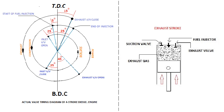Exhaust Stroke: In the exhaust stroke, the piston travels from bottom dead center to top dead center. Exhaust gas is pushed out from the cylinder through the exhaust valve due to the upward movement of the piston. The exhaust valve closes about 15 degrees after top dead center, and this angle depends on the manufacturer.